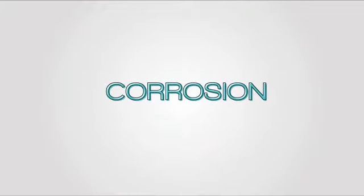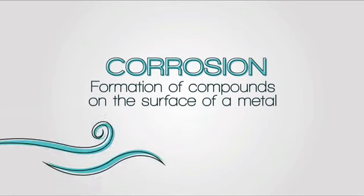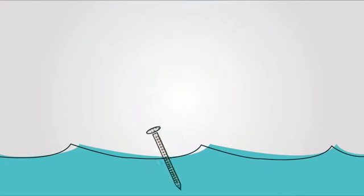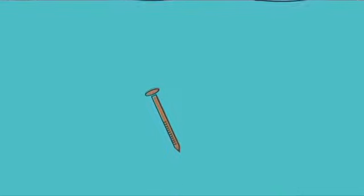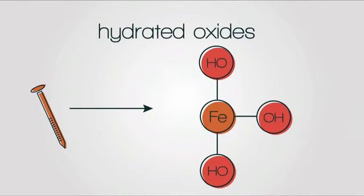This is because of corrosion. Corrosion is described as formation of compounds on the surface of a metal when it is exposed to air and/or water or an electrolyte like salt water. Typically, once a metal corrodes, it forms compounds known as oxides or hydrated oxides.